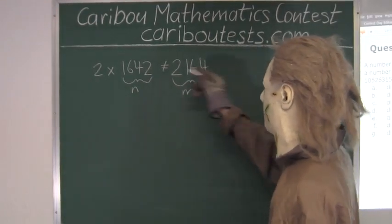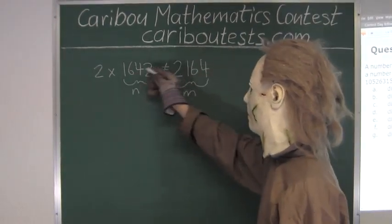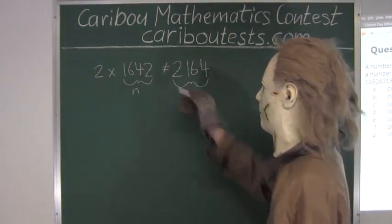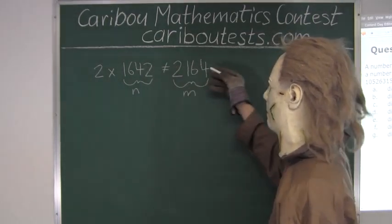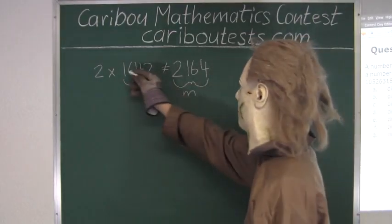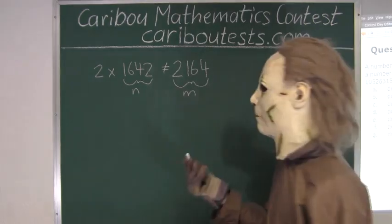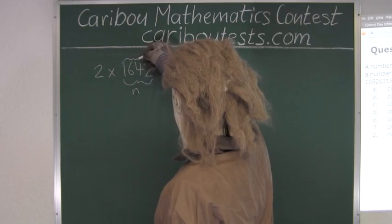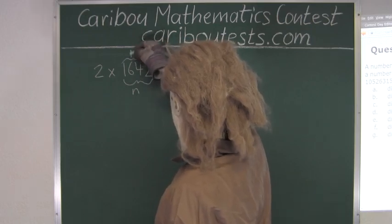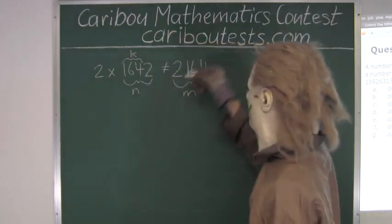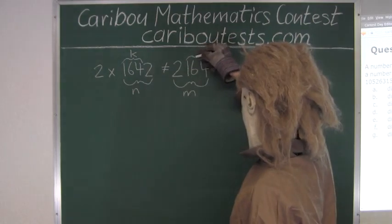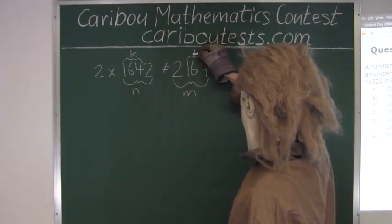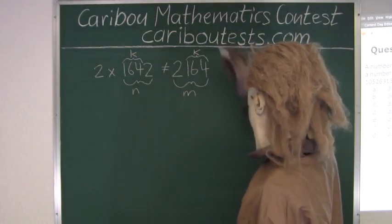Now we know that the 2 goes to the front and the digits all move to the right one. We know that these digits still stay in the same order, which here would be 164. So let's call 164 k.